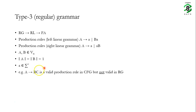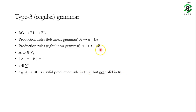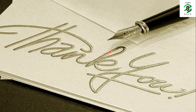For example, A arrow BC is a valid production in a context free grammar but not in a regular grammar, because regular grammars cannot have two non-terminals on the right hand side of a production rule. Hopefully we have understood the four types of grammars and the Chomsky hierarchy. In the next class we will talk about Finite State Machines or Deterministic Finite Automata. Thank you.